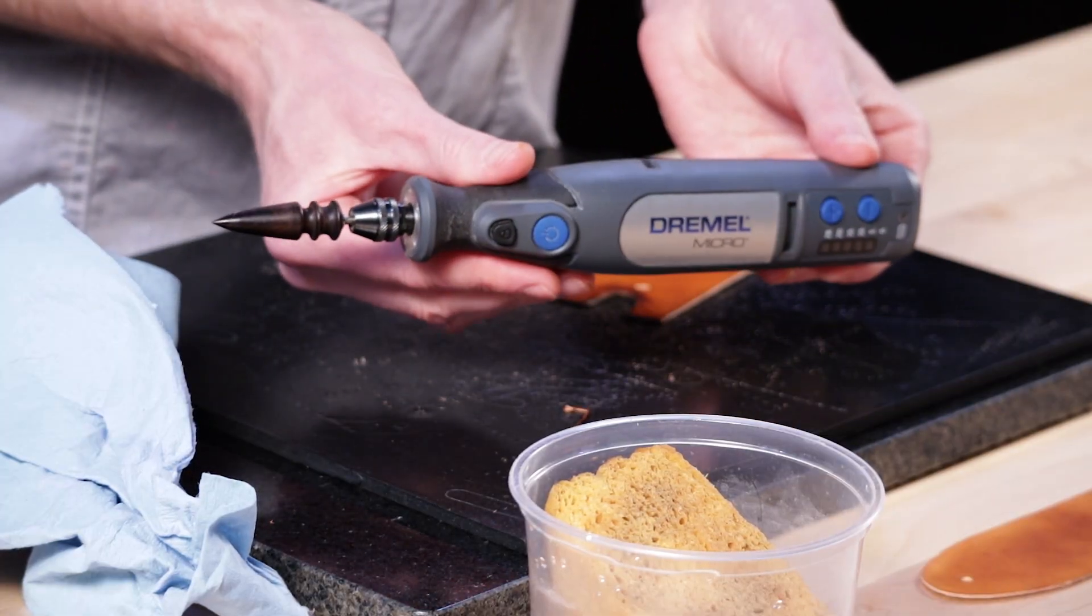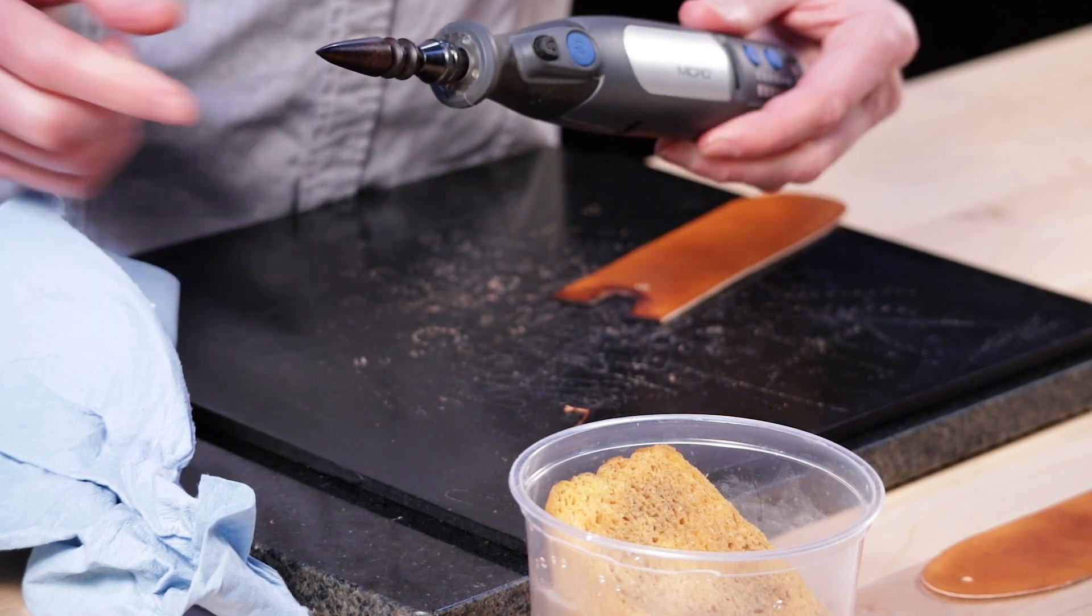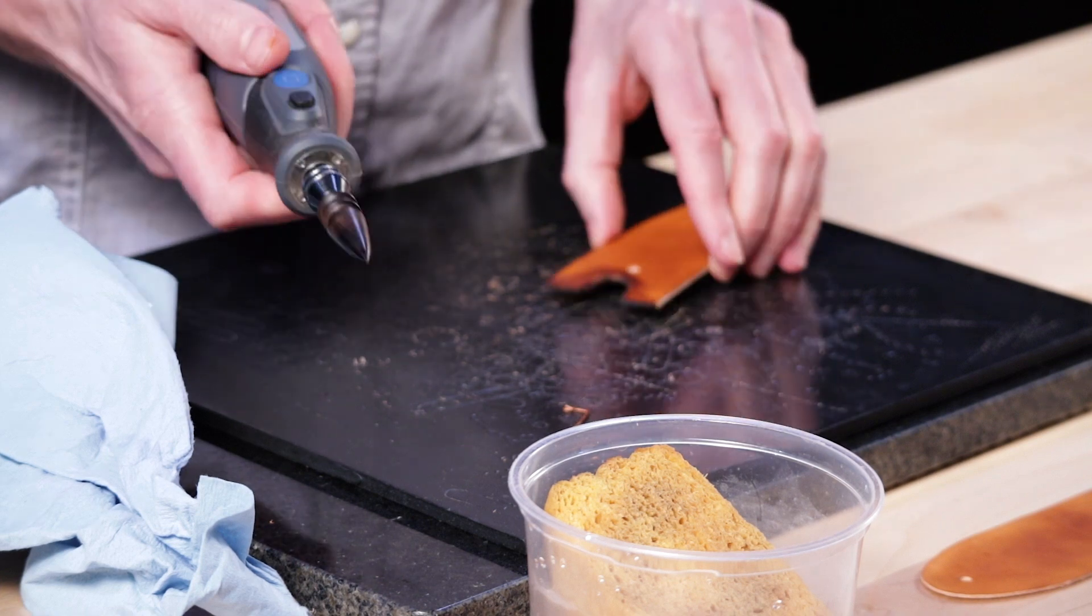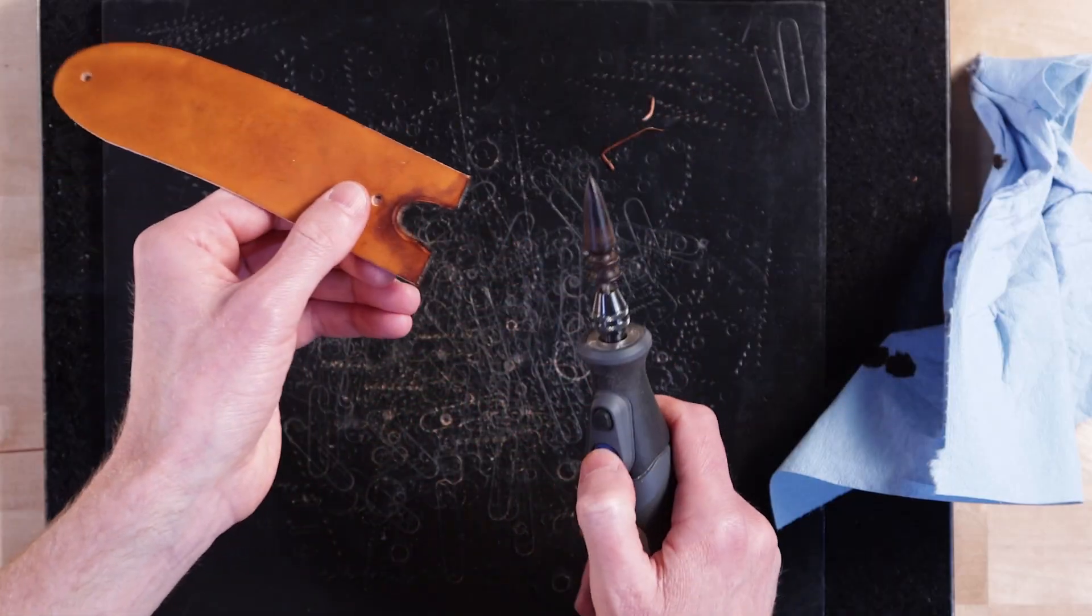Another option to burnish is to use a Dremel with a little special tip. It's a Cocobolo tip and it's specifically for burnishing inside edges of like belt loops and tight spaces like this.